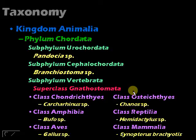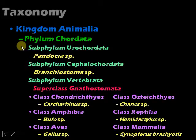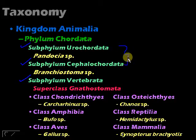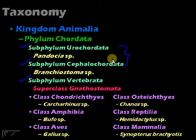Looking at the taxonomy, among the chordates we have three main subphyla: Urochordata, Cephalochordata, and Vertebrata. We will deal with subphylum Vertebrata later. First, let's talk about these two non-vertebrate groups to gain a better appreciation of chordates.